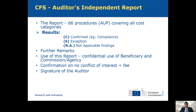In the auditor's independent report we find 66 procedures covering all cost categories. For each of these procedures the auditor needs to complete in the table C for confirm — meaning it is complying with what they need to check — or an exception, and they need to explain the exception. The confirmation or exception needs to be based on audit work; oral representations are not enough. If the beneficiary doesn't declare equipment costs, for example, then the tests for equipment are not applicable and the auditor will write not applicable for that section and explain why. This report is confidential and should be used by the beneficiary and the commission agency only. There is also a confirmation of no conflict of interest, a mention of the fee paid, and a signature of the auditor.